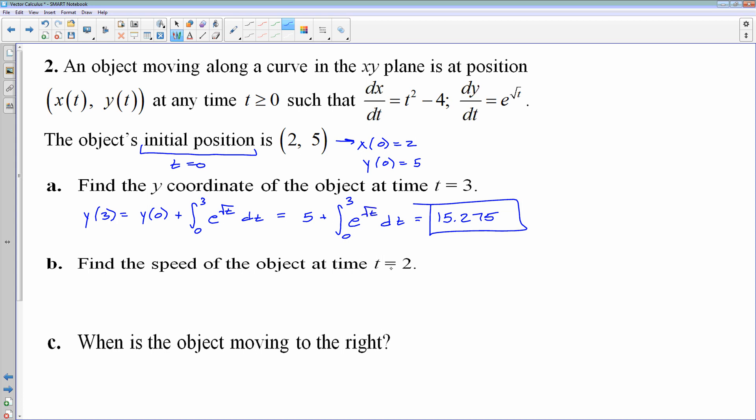Find the speed of the object at time 2. Okay, well, speed, we did talk about speed is the magnitude of velocity. So my speed is going to be the square root, and remember, we were given the velocity up here. We're given dx/dt and dy/dt. So my speed is going to be the square root of, and I'll plug 2 in, so 2² - 4 plus e^√2. And again, we will throw that in the calculator. And you get approximately 4.113.